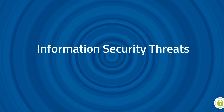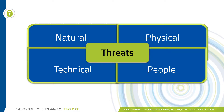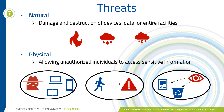Our next stop is different information security threats. Our four biggest threats are natural, physical, technical, and people. Natural threats can be defined as anything from nature — fire, flooding, lightning strike, anything of that sort.